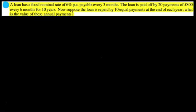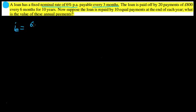A loan has a fixed nominal rate of six percent per annum. Nominal is just the rate that's quoted — it's not the actual amount you're going to be getting back. The loan is payable every three months, which means the effective rate is six percent divided by four (since there are four three-month periods in a year), giving us one and a half percent.